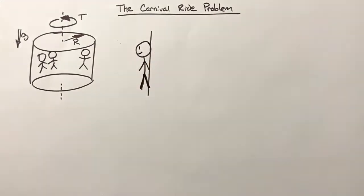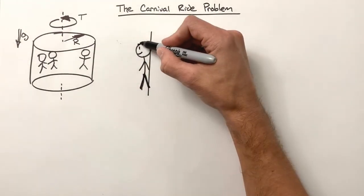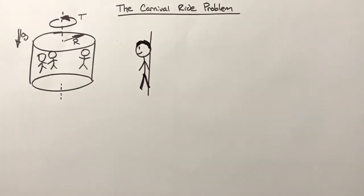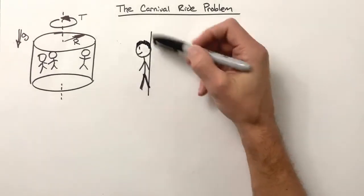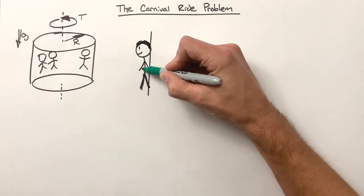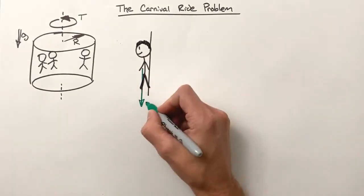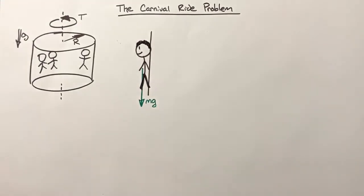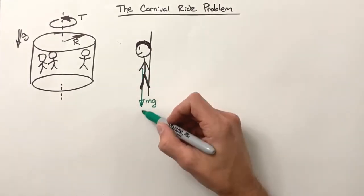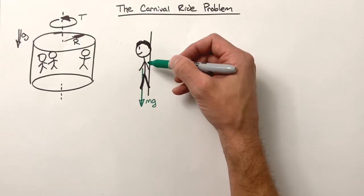We're looking at them from the side — we'll give them a little bit of hair. Now we're going to look at all the forces acting on this person. Obviously, gravity is acting downward. Just because this person is spinning in a room and the floor has dropped out doesn't mean gravity has gone on a coffee break — gravity is always acting downward, pulling with a force of mg.